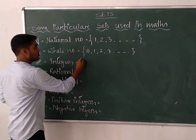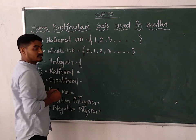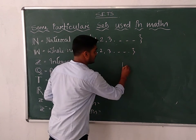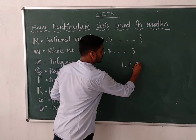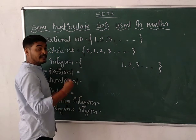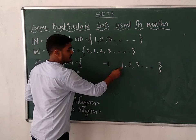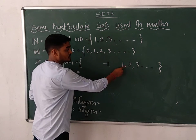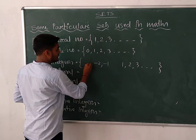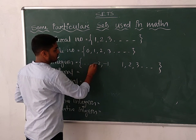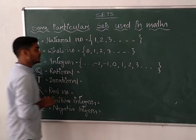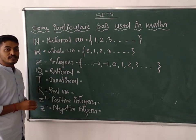Next, integers. What do you mean by integers? First of all, we consider the natural numbers, and then their negatives — that means negative 1 (minus 1), negative 2 (minus 2), and so on — and their negatives, including 0. Together these are known as the set of integers.